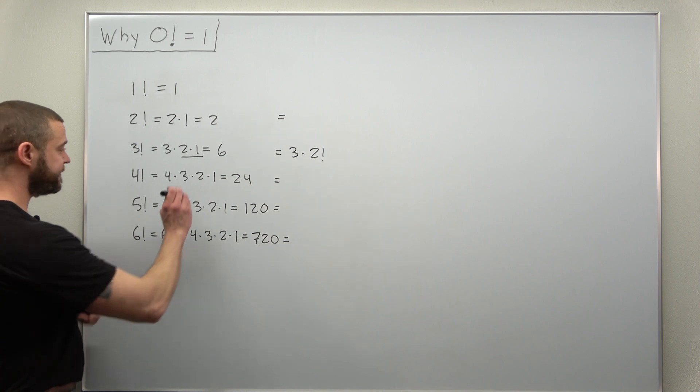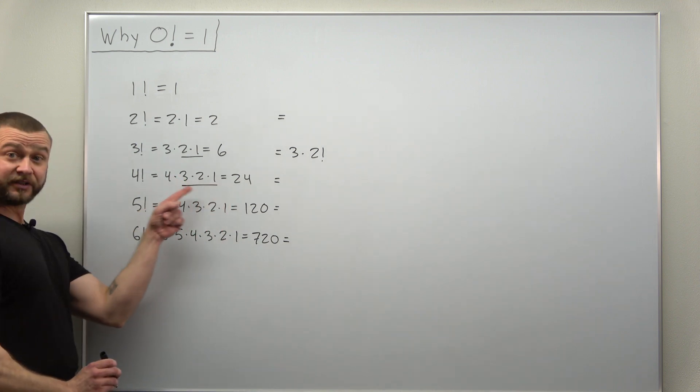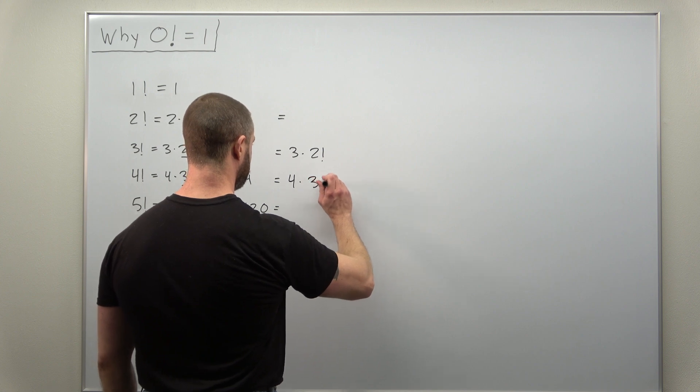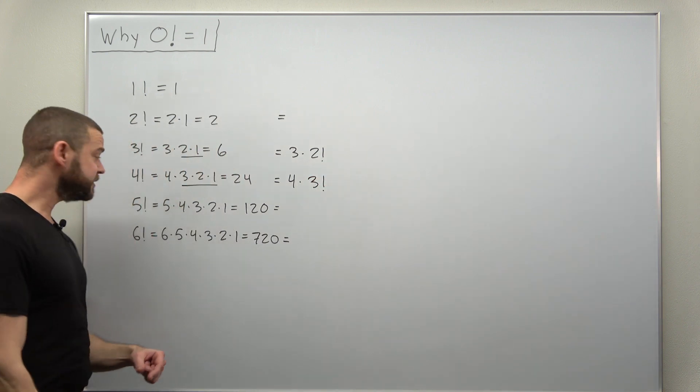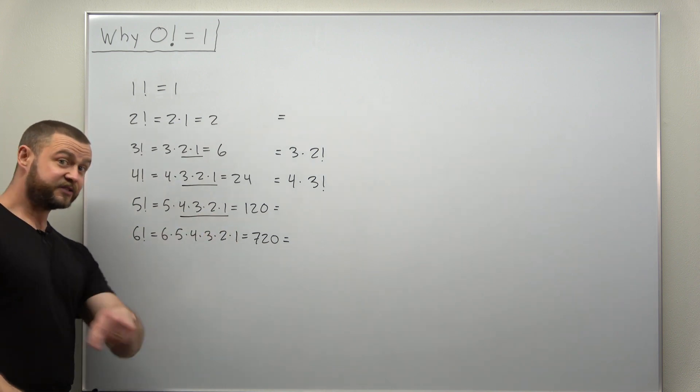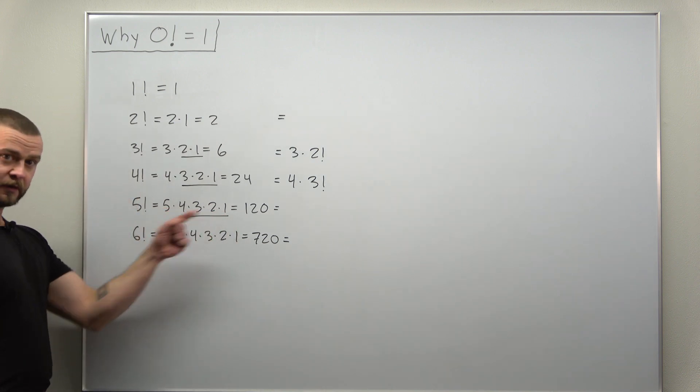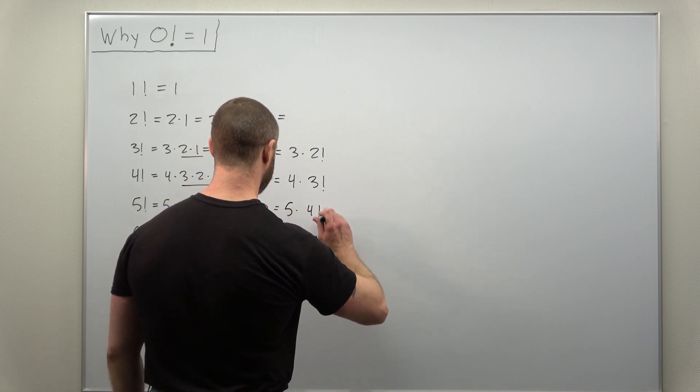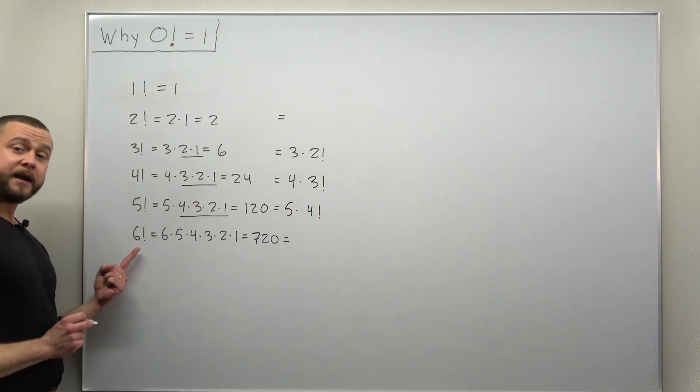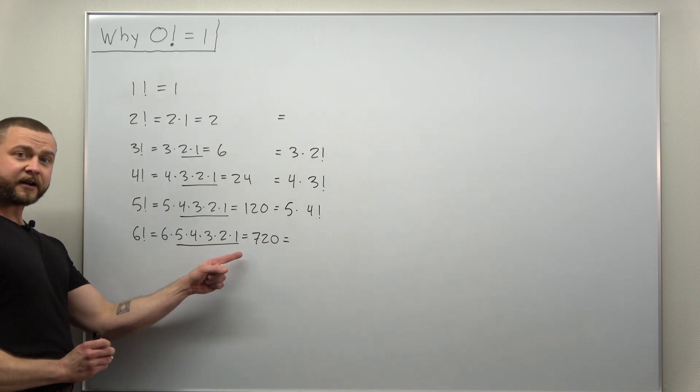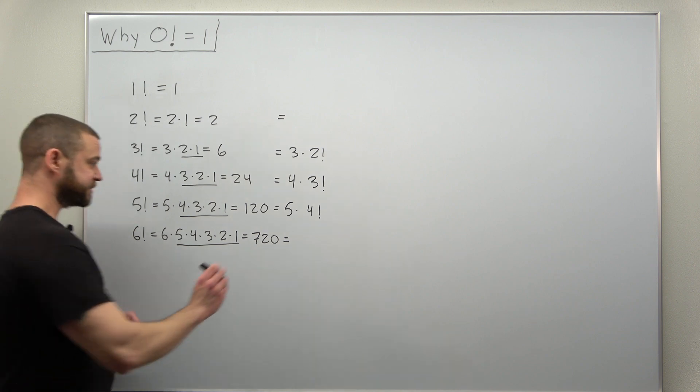Same thing here. Four factorial contains three factorial. And that pattern continues. Five factorial contains the previous factorial. We can write that as five times four factorial. And again that holds here as well: six times five factorial.